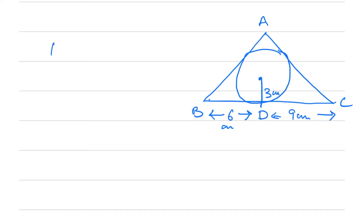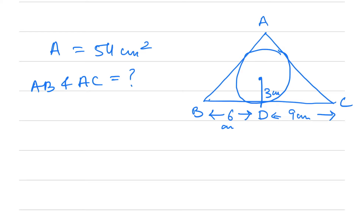The area is given as 54 square centimeters and we have to find AB and AC. We join the points of contact of the tangents to the center O. All these angles are 90 degrees and all radii are 3 centimeters. We join AO, BO, and CO.